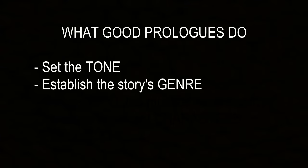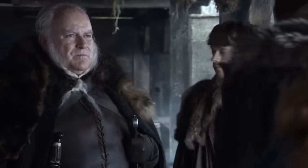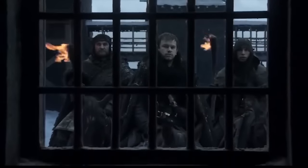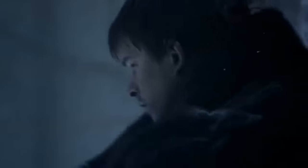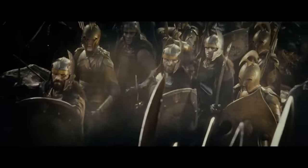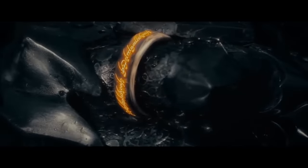Another thing good prologues do: they establish the genre when the opening of the main story can't do this. This is what Game of Thrones does — it's a fantasy story, and most of the early episodes are gritty realism without much fantasy. So in order to send the message that this is a fantasy story, the show opens up with a scene where we get some supernatural elements. Another thing good prologues do: they convey necessary info that must be known prior to the main story — things like world building details, backstory details — and they do this through showing us a scene, not just dumping info, but actually showing action, characters interacting, things happening.